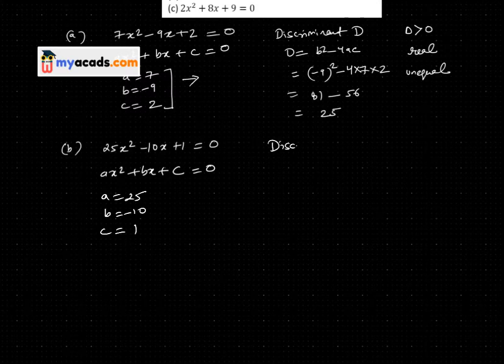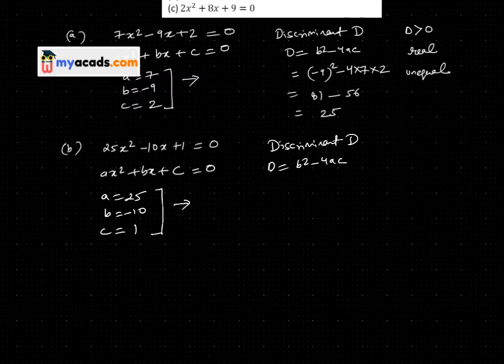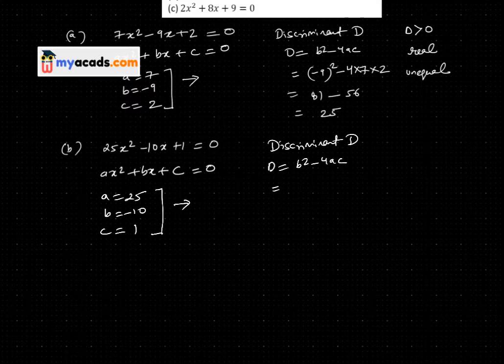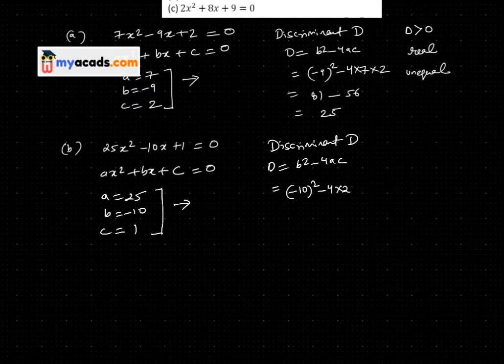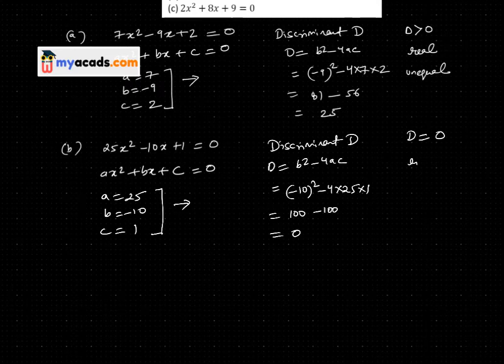Now for the nature of roots, I find the discriminant. D = b² - 4ac = (-10)² - 4(25)(1) = 100 - 100 = 0. When D = 0, the roots are real and equal.